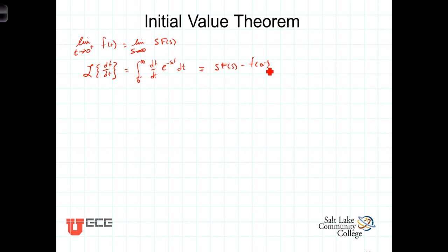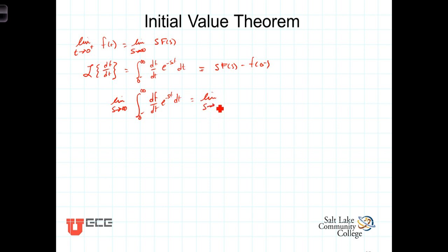That's the operational transform we proved in an earlier video. The proof proceeds by taking the limit as s approaches infinity on both sides of this equation. So we have the limit as s approaches infinity of the integral from 0 minus to infinity of (df/dt)·e^(−st) dt, equal to the limit as s approaches infinity of s·F(s) minus f(0 minus).